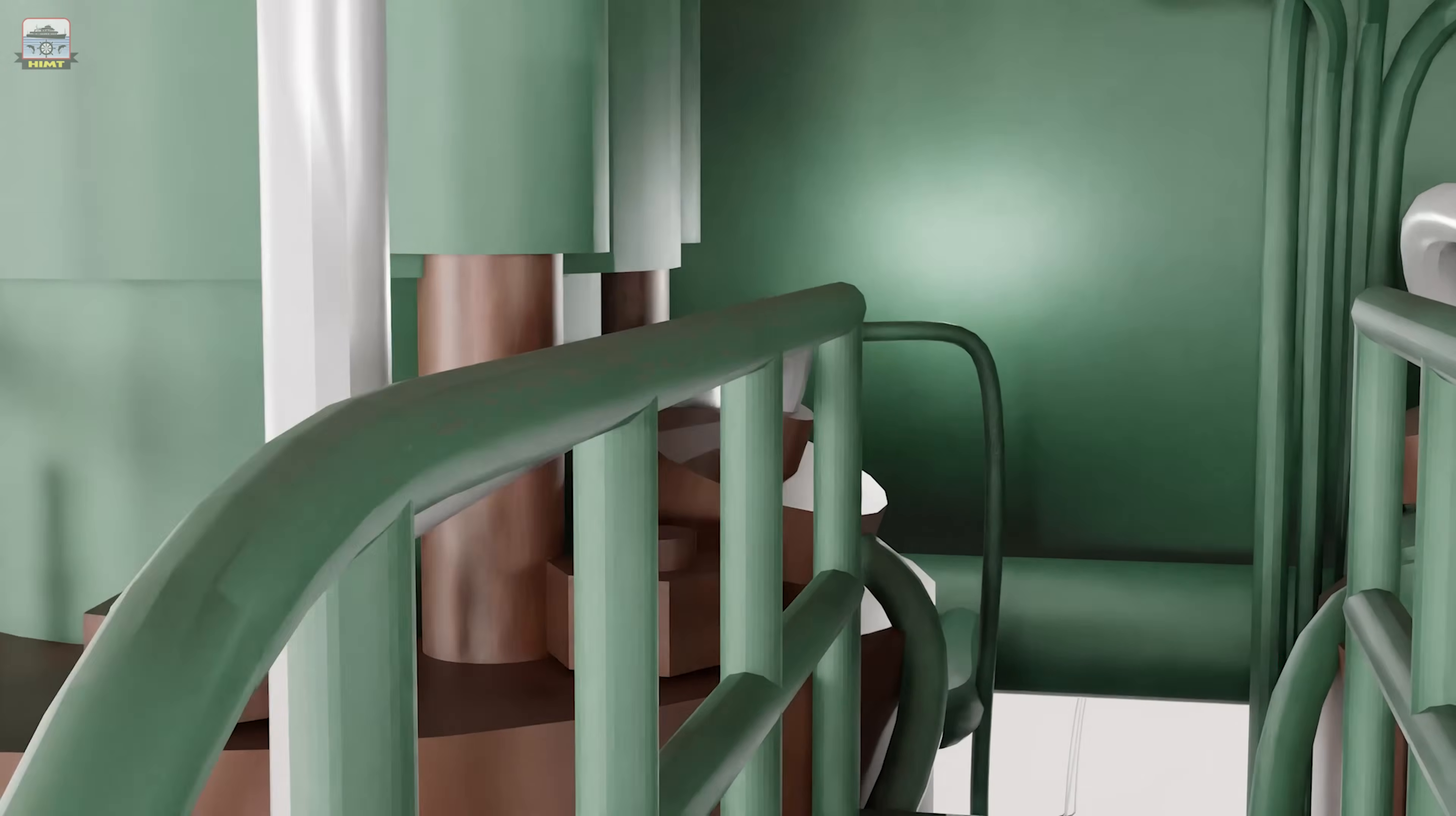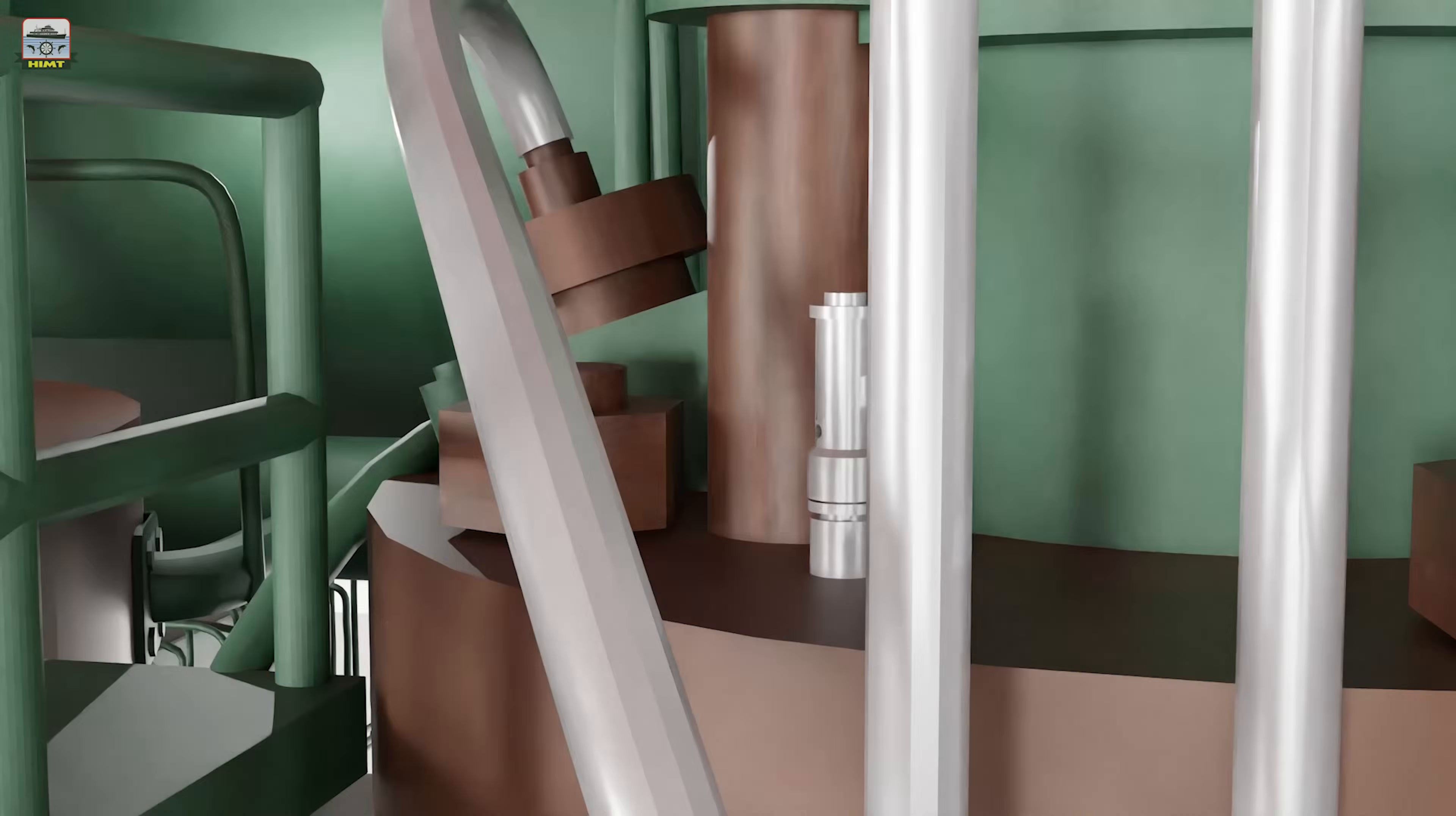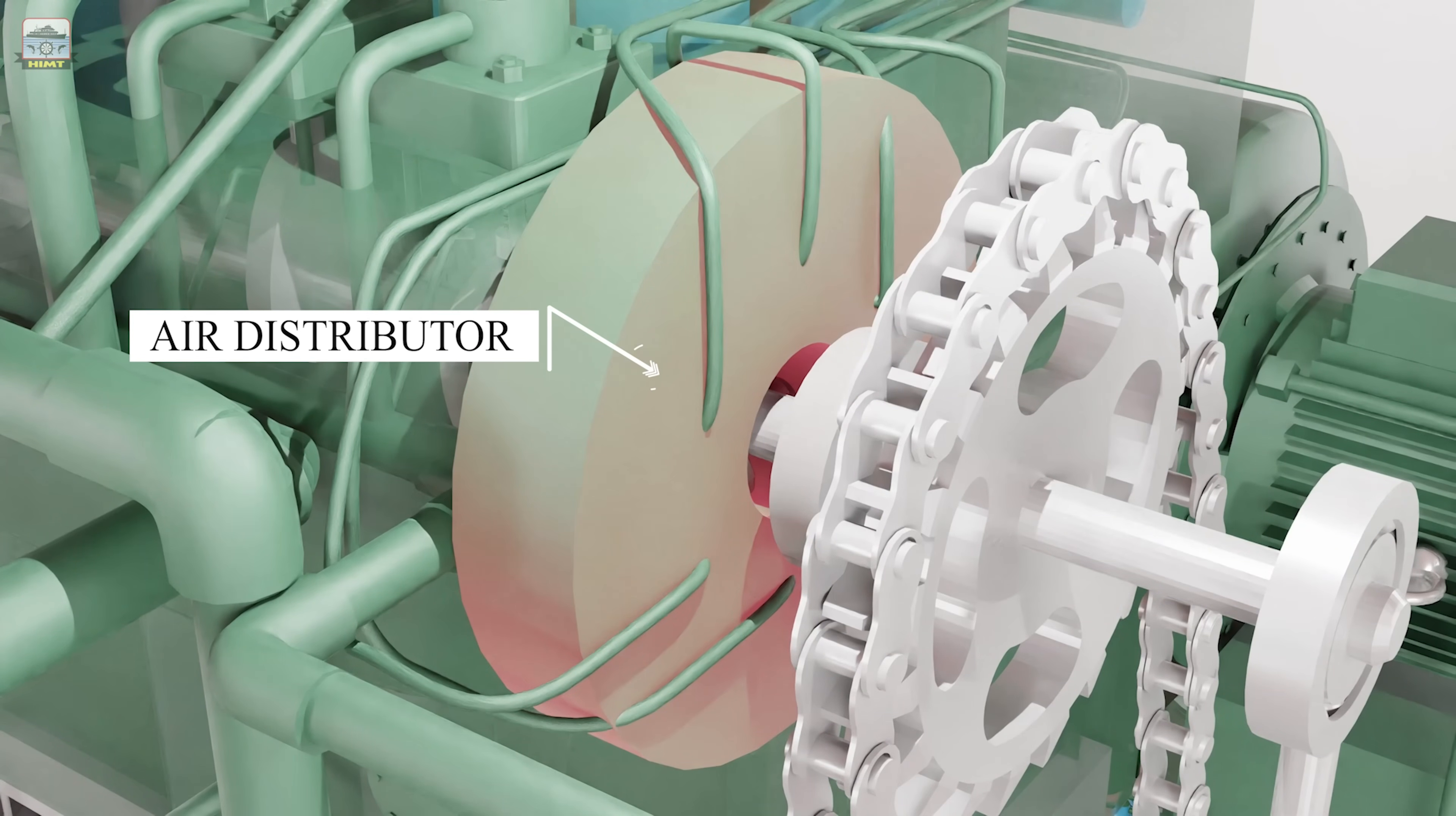The cylinder head also accommodates a starting air valve. The starting air valve is opened by the pilot air which is supplied in sequence to various units as per the firing order from the air distributor. The air distributor is operated by the camshaft.